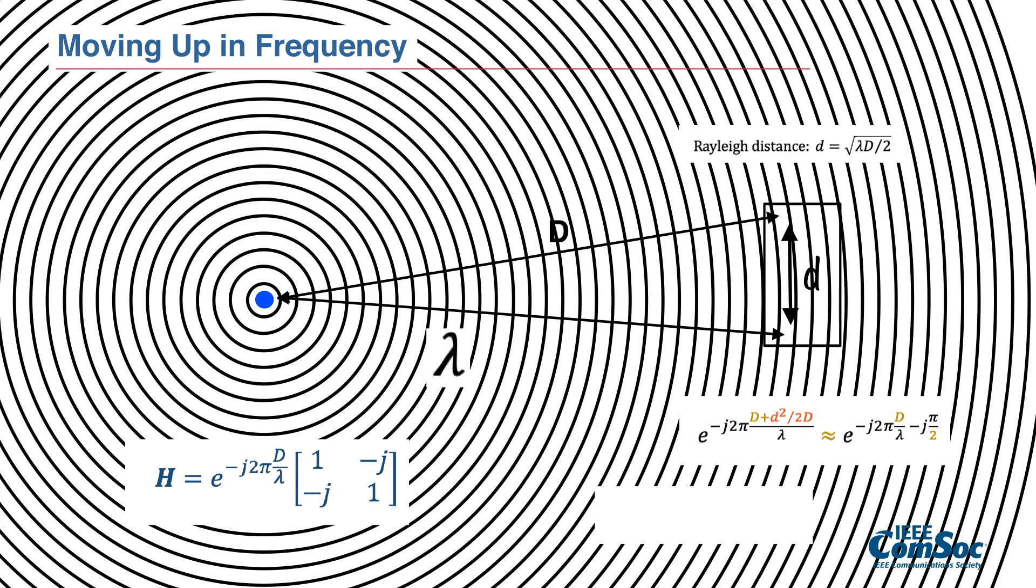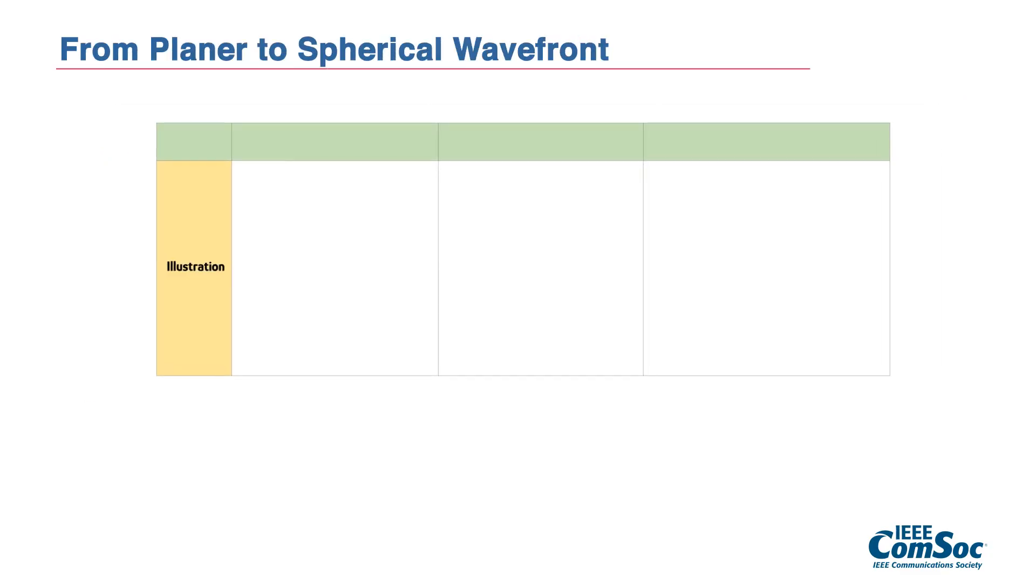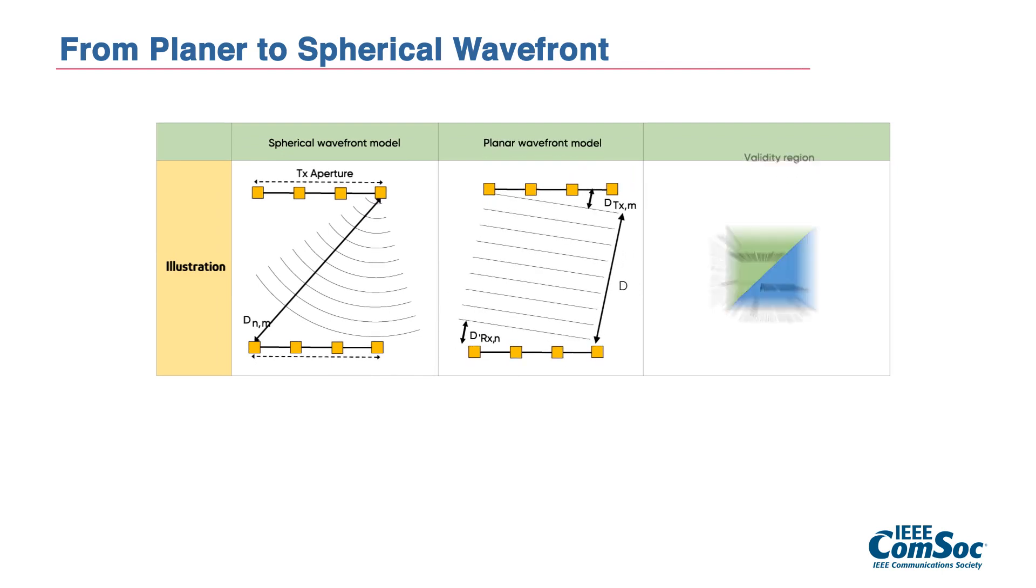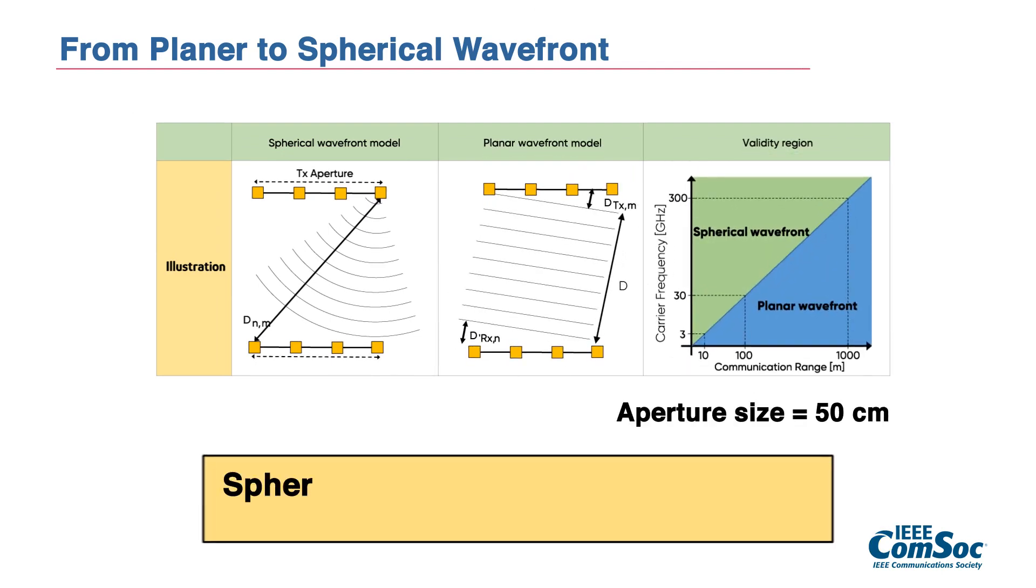the MIMO channel becomes orthogonal. This implies that we can send two independent data streams at the same time, even under line-of-sight MIMO channel conditions. So, spherical wavefront model is essential for Terahertz line-of-sight MIMO study.